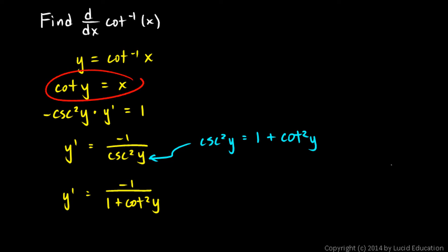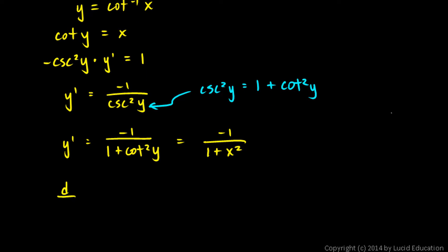Using the trig identity cosecant squared y equals 1 plus cotangent squared y, and remembering that cotangent y equals x, we substitute to get y prime equals negative 1 over 1 plus x squared. So the derivative with respect to x of the inverse cotangent of x is negative 1 over 1 plus x squared.